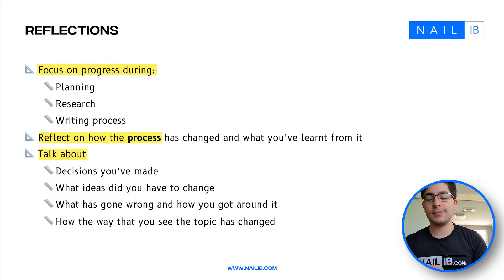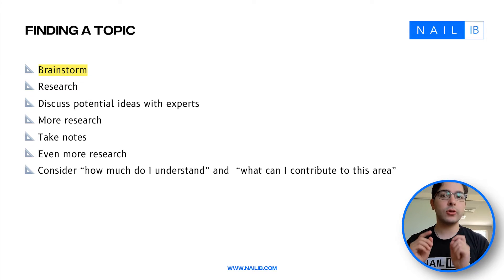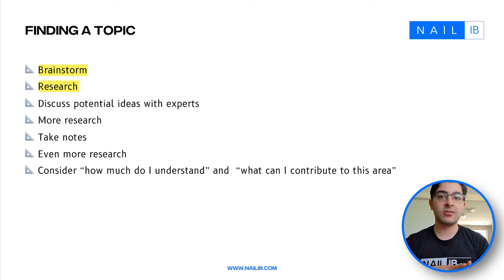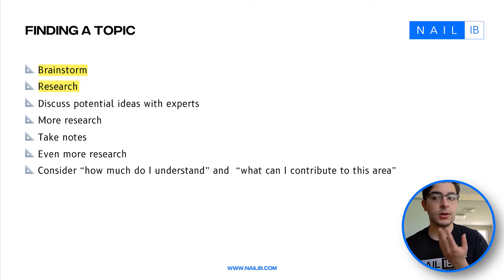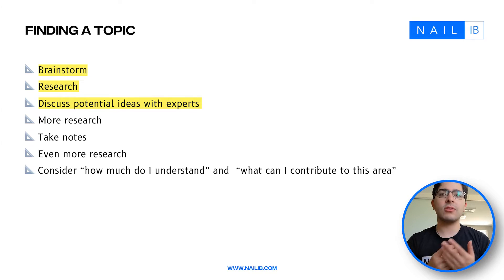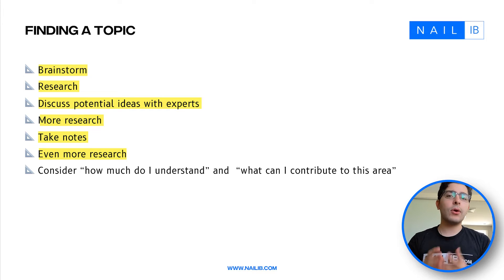When finding a topic, I'd suggest brainstorming — similar to the maths IA process. Write down any ideas that seem interesting. Do a lot of research: search up areas that interest you, see if there are potential avenues, and write notes. I'd suggest having a OneNote or Word document with potential ideas and sub-points under each one, along with research points from different sources. You could also discuss ideas with experts — maybe email a lecturer. Research is emphasized here because you genuinely need to do a lot of it.